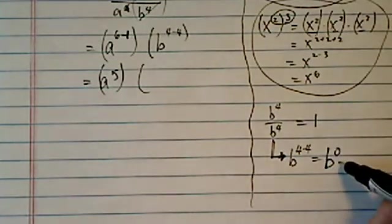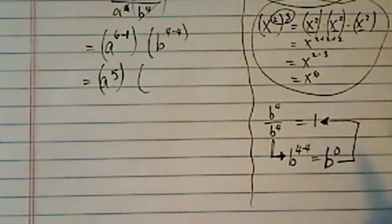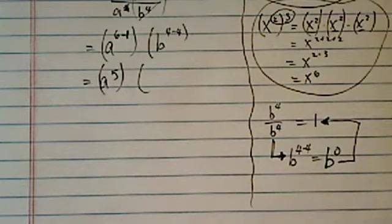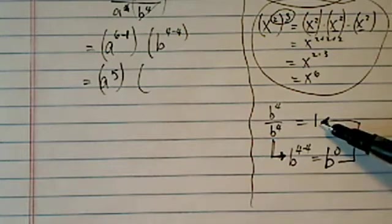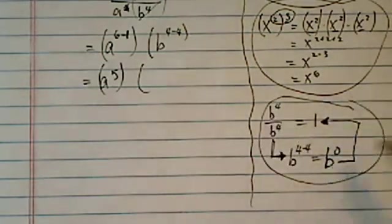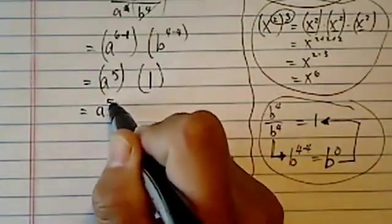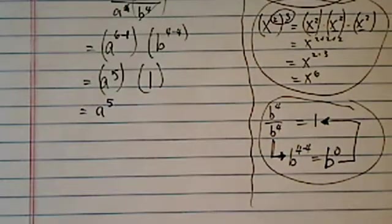Now, math is one of the few things that does not have any contradiction to itself. So, therefore, in order to complete the circle, b to the zero must equal to one. So, anything to the zero power equal to one. That's pretty cool. And then the answer is a to the fifth.